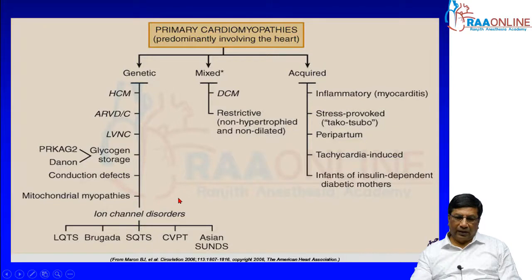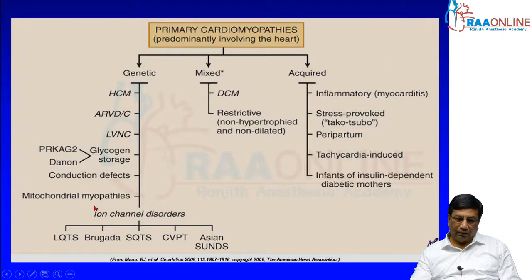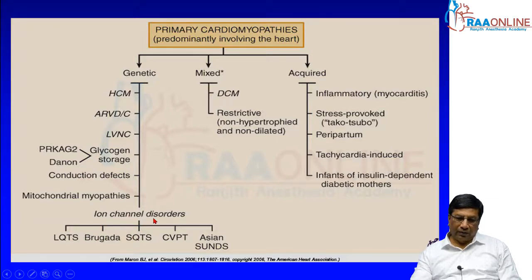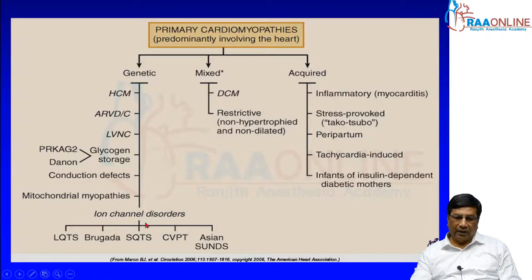All these are very rare. Even when there is no structural abnormality of the heart, if you have ion channel disorders shown on the electrocardiogram, they are also grouped under genetic cardiomyopathies. These include Long QT syndrome, Short QT syndrome, Brugada syndrome, catecholaminergic polymorphic ventricular tachycardia, and Asian sudden death syndromes — all electrocardiogram abnormalities due to ion channel disorders with no structural heart disease.